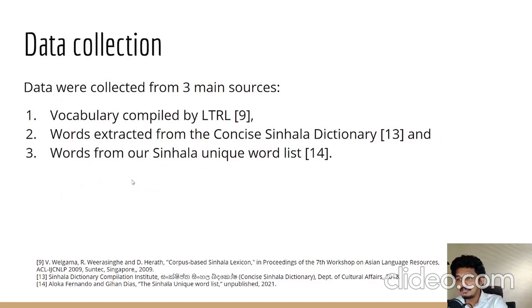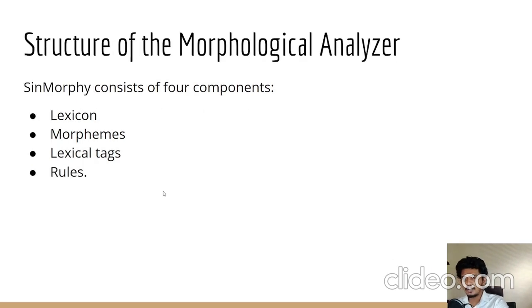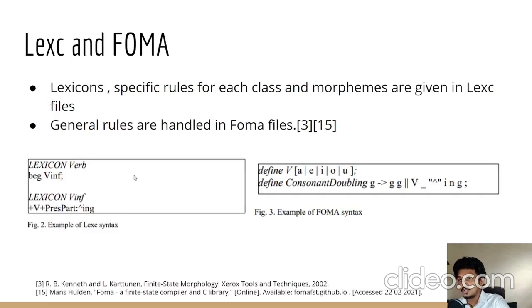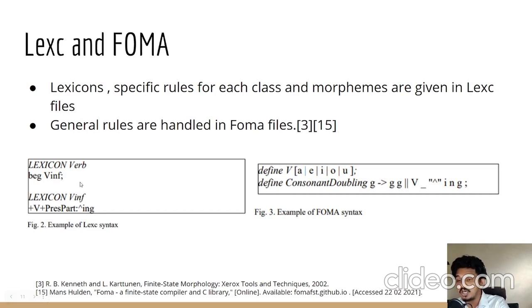We collected data from three main sources: the vocabulary compiled by LTRL (work by Viraj Velgama and others), words extracted from the Concise Sinhala Dictionary, and words from our unique word list. A morphological analyzer has four major components: the lexicon describing vocabulary of stems and morphemes; lexical tags defining part-of-speech and morphosyntactic features; and rules defining how lexicons and morphemes are combined. We use lexc and foma to develop our FSTs — lexicons and specific rules per class are given in lexc files, while general rules are handled in foma files.